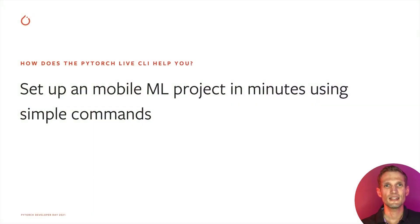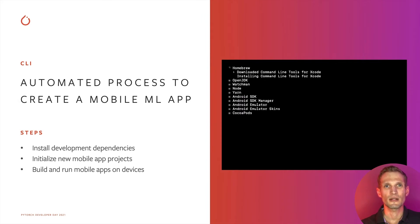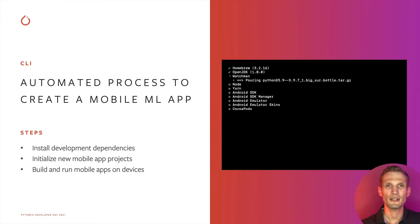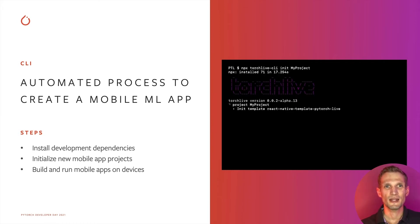Let's start with the command-line interface, or CLI for short. The CLI reduces the setup cost for mobile app development and helps you set up a mobile app project for PyTorch mobile models in just a few minutes using simple commands. The setup dev command will install development dependencies including tooling like Yarn, Watchman, and CocoaPods, SDKs like OpenJDK and Android SDK, and an Android emulator. This is a one-time install, so it takes a few minutes depending on internet speed and your computer.